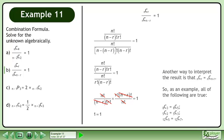So, as an example, all of the following are true. 8 choose 3 equals 8 choose 5. 5 choose 2 equals 5 choose 3. And 12 choose 5 equals 12 choose 7.